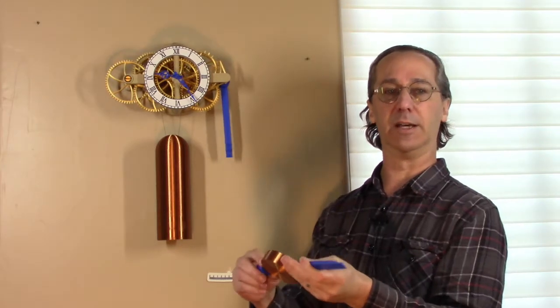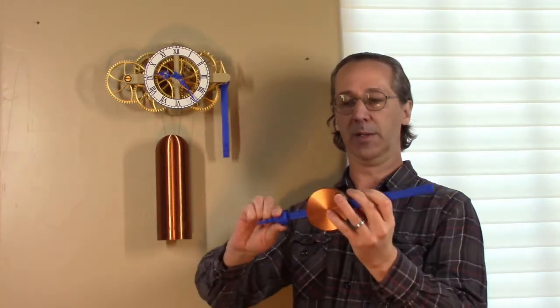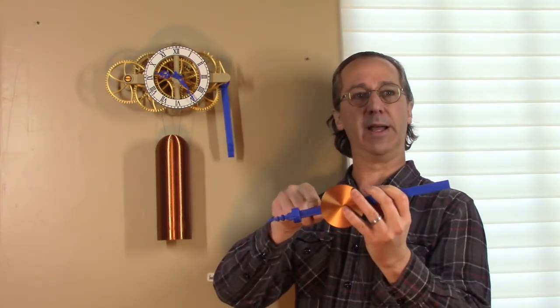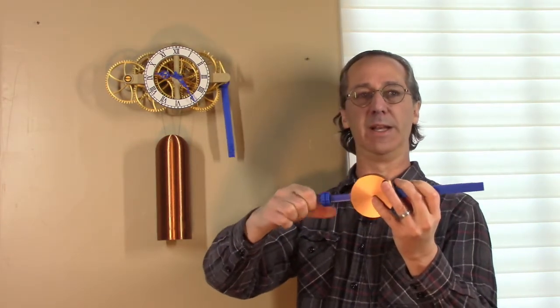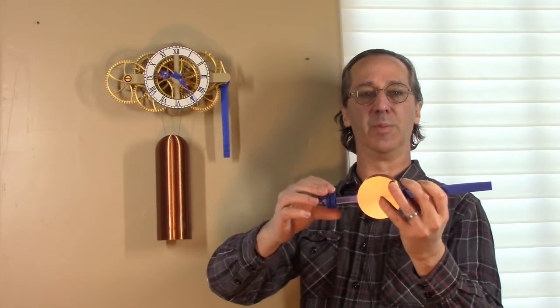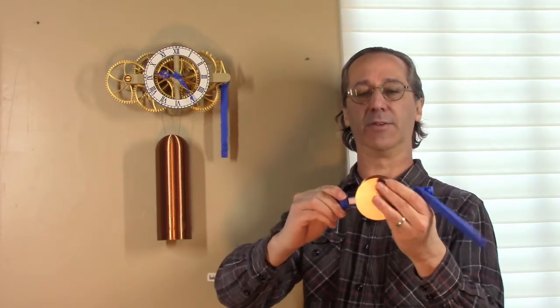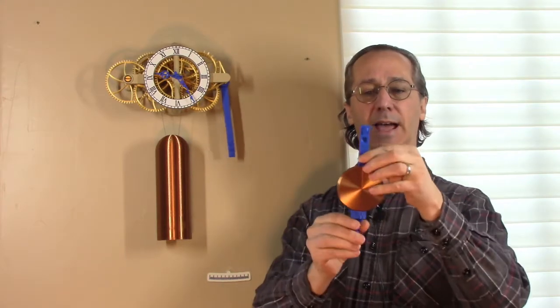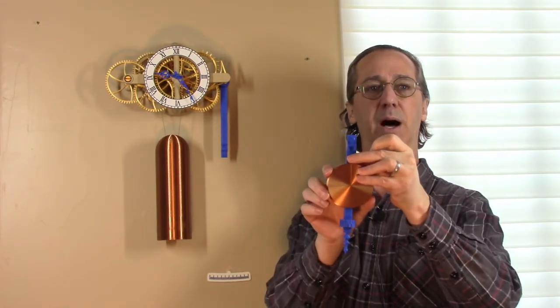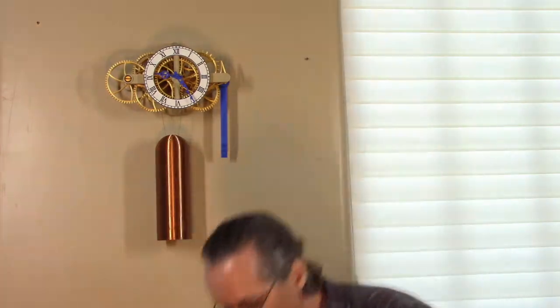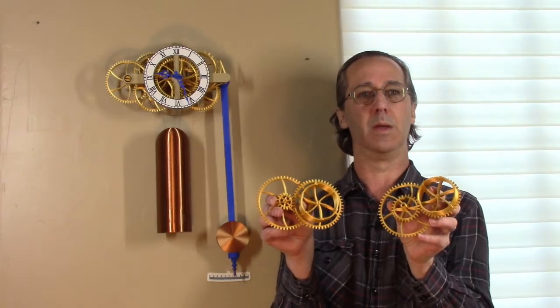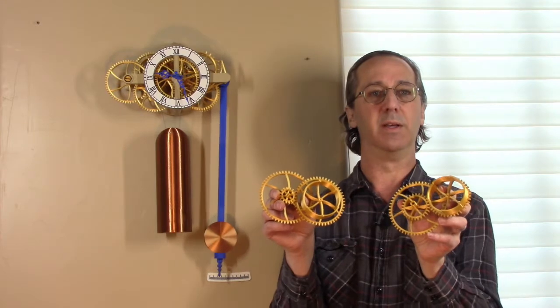A couple of other features on this clock: tapered pins to hold the pendulum in place, really easy to take the pendulum off. At the bottom of the pendulum there's a threaded shaft and some printed nuts that can be rotated. There's two nuts so they can lock in place, and that sets the depth of the pendulum bob to change the rate of the clock.